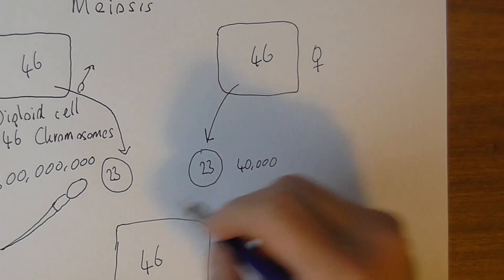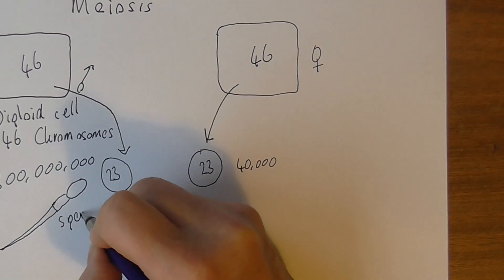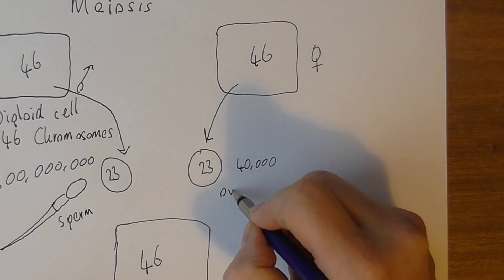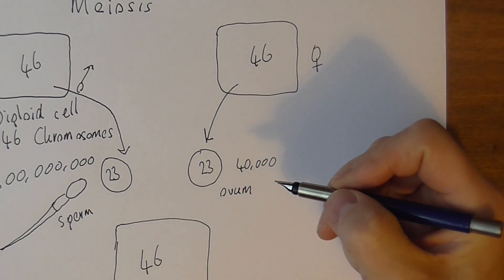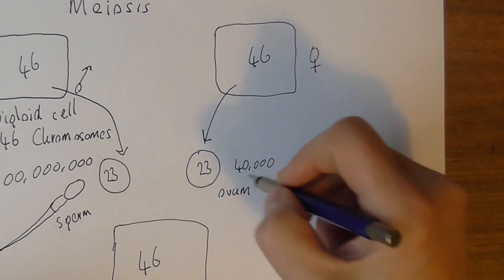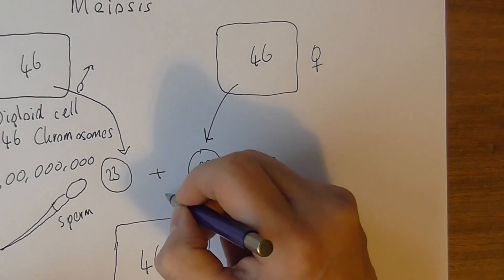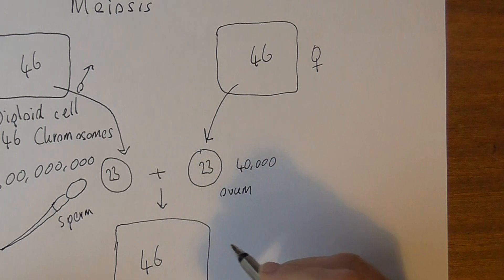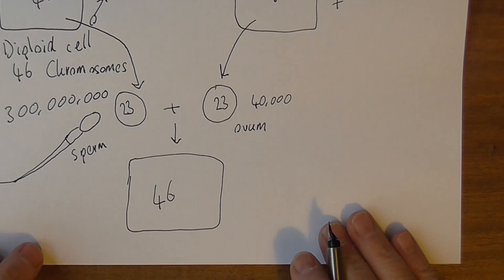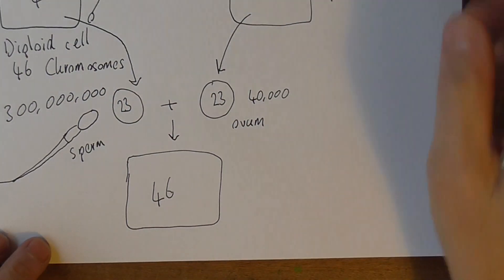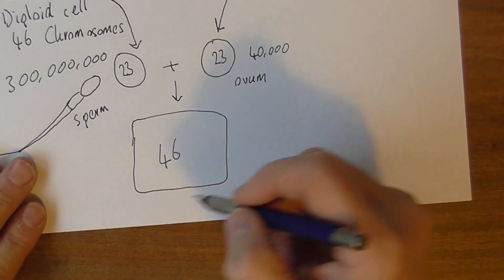So these will be the sperm and these will be the ovum. Of course, one sperm fertilizing one ovum, 23 plus 23 gives us 46 to start the next generation, and this first cell of the next generation is called the zygote.